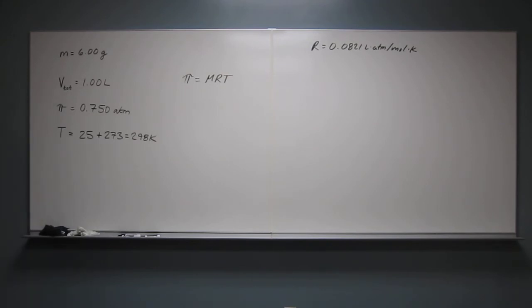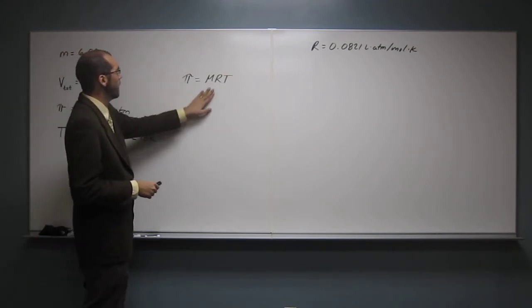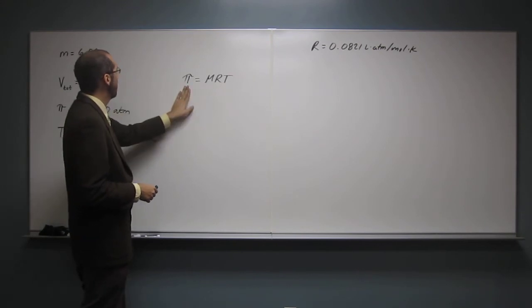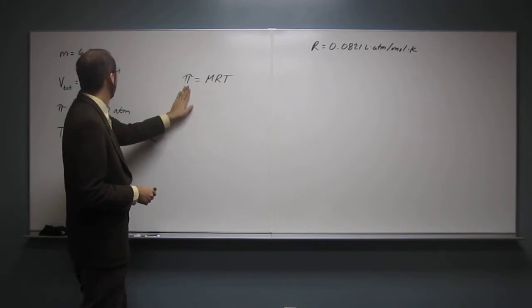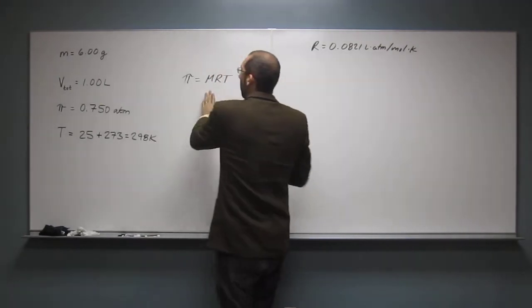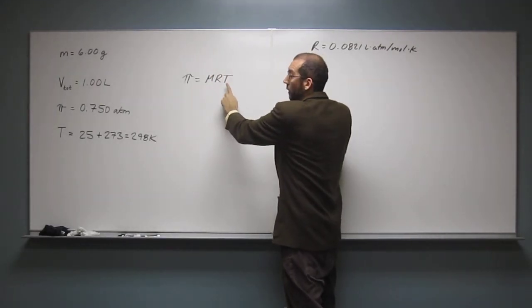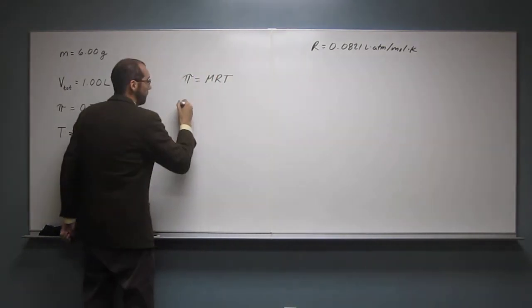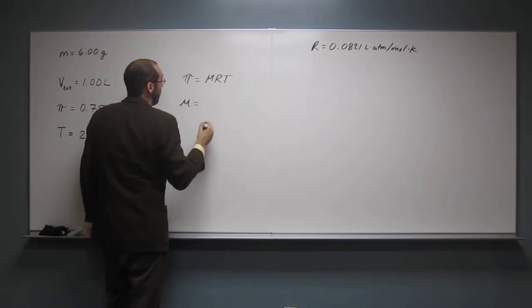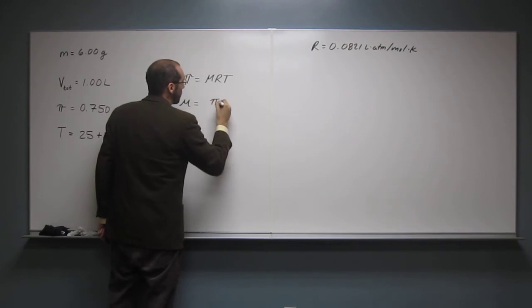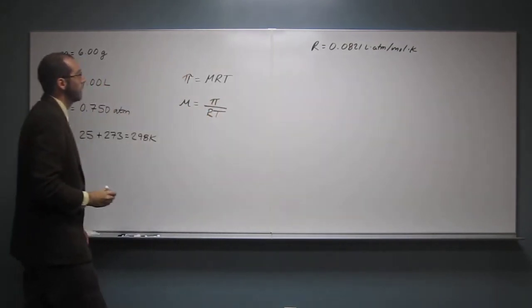Okay, so let's look at this equation here. What do we not have? Well, we've got osmotic pressure. We've got molarity. No, we don't have that. We've got R and we've got T. So let's solve for molarity. So molarity equals pi divided by RT.